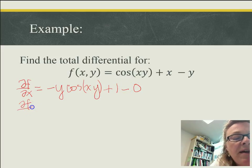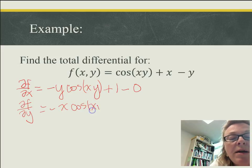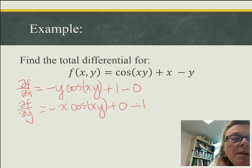I do something similar. I take the partial of f with respect to y. This time, though, I'm going to get negative x cosine of xy plus 0 minus 1. So those are the two partial derivatives that I need to be able to do my total differential.